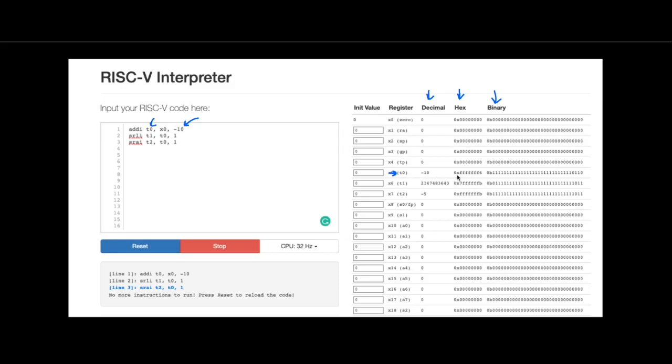So what I did is I just put in negative 10 into T0. So it's negative 10, and it is sign-extended in hex with all F's, and it is sign-extended in binary with all 1's.